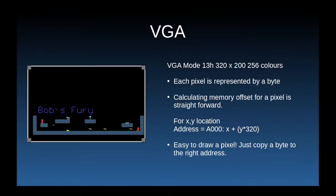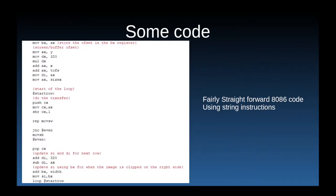Coding for VGA in Mode 13h is relatively straightforward, as the memory is arranged as a linear buffer of 64,000 bytes with each byte representing a pixel. With a bit of simple math it's easy to draw to the screen. I don't really need something more advanced such as Mode X, as all I'm doing is throwing bitmaps around. I was able to fairly quickly make relatively efficient code for this graphics mode using the 8086 string instructions and basic optimizations. I'm sure you could make something faster but I've hit the point of diminishing returns.